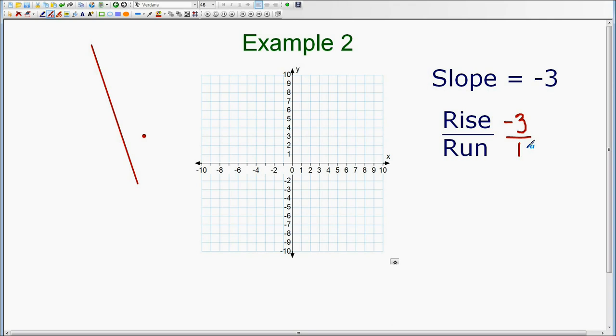The definition for slope rise over run is a set of directions. The first thing that we're going to do is we're going to plot our first point. So as an example, I'm going to plot my first point at 0, 2 on the axis there.